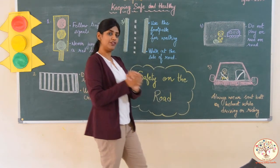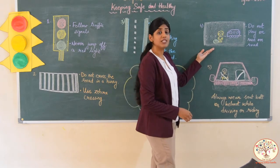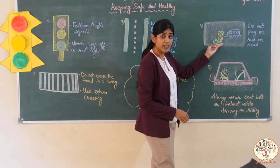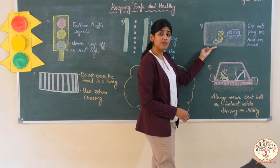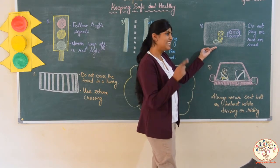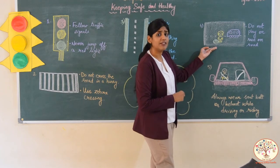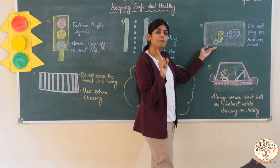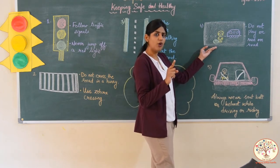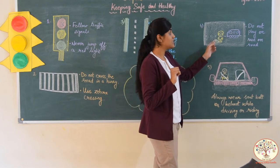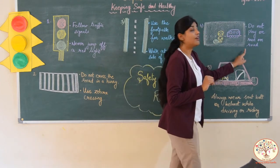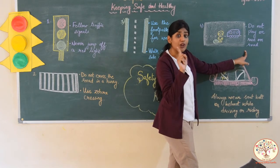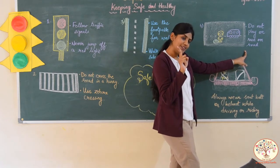Now let's move to the fourth safety rule. Can you see what this child is doing in the picture? Yes, he is playing ball. Do you think he is playing at the right place? No, he should play on the playground or at home. So the fourth rule is: do not play or run on the road.